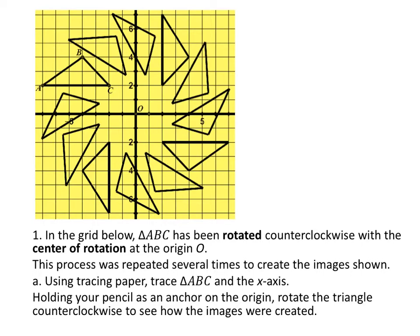In the grid below, triangle ABC has been rotated. They show triangle ABC — that's the original pre-image. It's been rotated counterclockwise, which is important to know — counterclockwise is in this direction, to the left. With the center of rotation at the origin, which we'll put the point right there.